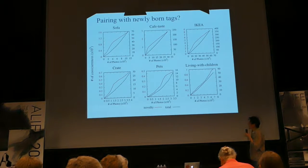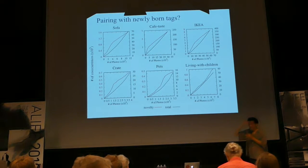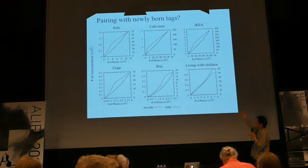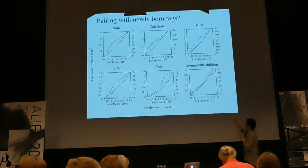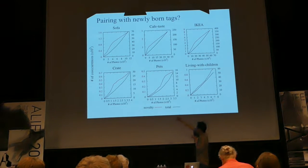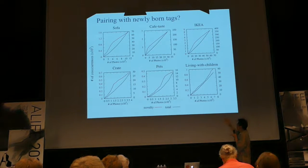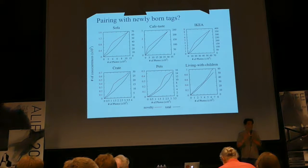We looked at each tag individually. Tags like 'sofa,' 'cafe taste,' or 'Ikea' show the number of times a tag was associated with photo submissions. The black line is how many tags are combined when they are submitted. The red line is how many new tags came up when the tag is submitted. For example, when 'pet' is submitted — around 2,000 photo submissions — the pet tag starts combining with new tags, meaning when you use 'pet' as a tag, you want to put another tag with it. So 'pet' is inducing novel tags to emerge.